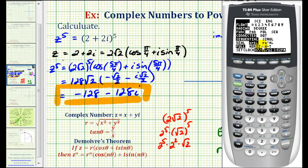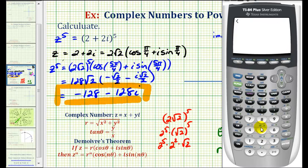So I'm going to press the mode key. Notice how I have a+bi highlighted, which means it is in complex mode. So I'll go back to the home screen and then type in (2+2i)^5. This does verify that our answer is correct.